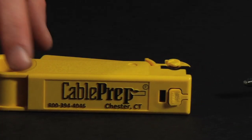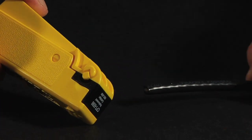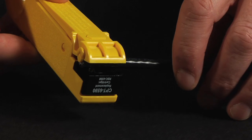The CPT 6590S contains an integrated stop making proper measurement and cable tool alignment even easier.